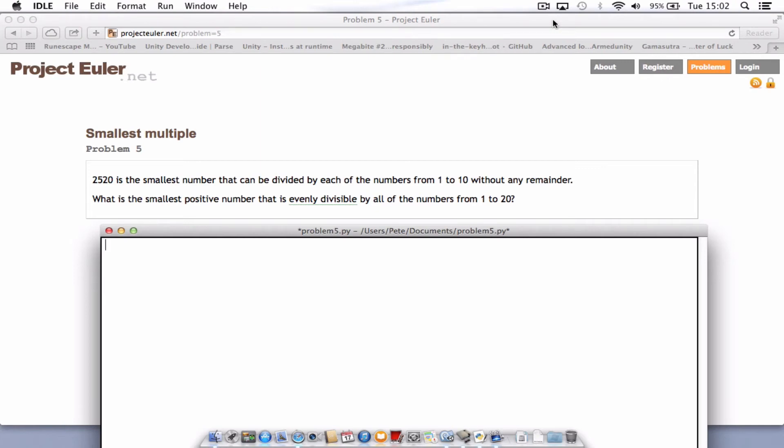Hello and welcome to problem 5. It's starting to get tougher now. This one, we've got the question here. So 2520 is the smallest number that can be divided by each of the numbers from 1 to 10 without any remainder. What is the smallest positive number that is evenly divisible by all numbers from 1 to 20?